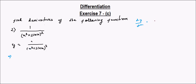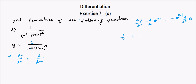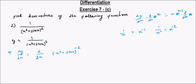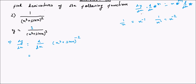Using the formula: dy/dx of [star] to the power n is equal to n into [star] to the power n minus 1 into dy/dx of [star]. Now, 1 by x cube plus sin x whole squared can be written as x cube plus sin x to the power minus 2, so we can use this formula where the star is x cube plus sin x and n is minus 2.